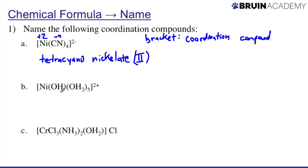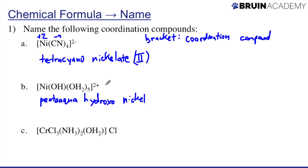For Example B, I start with the ligands and name them in alphabetical order. OH is a hydroxo group; H₂O is an aqua group. I write aqua first — I have five of them, so pentaaqua — then hydroxo, with just one. Then I write nickel. The overall charge is positive, so instead of '-ate' I write 'ion' at the end. Hydroxo is minus one, water is neutral, so nickel needs a charge of plus three to give the total plus two. I write nickel(III) ion.